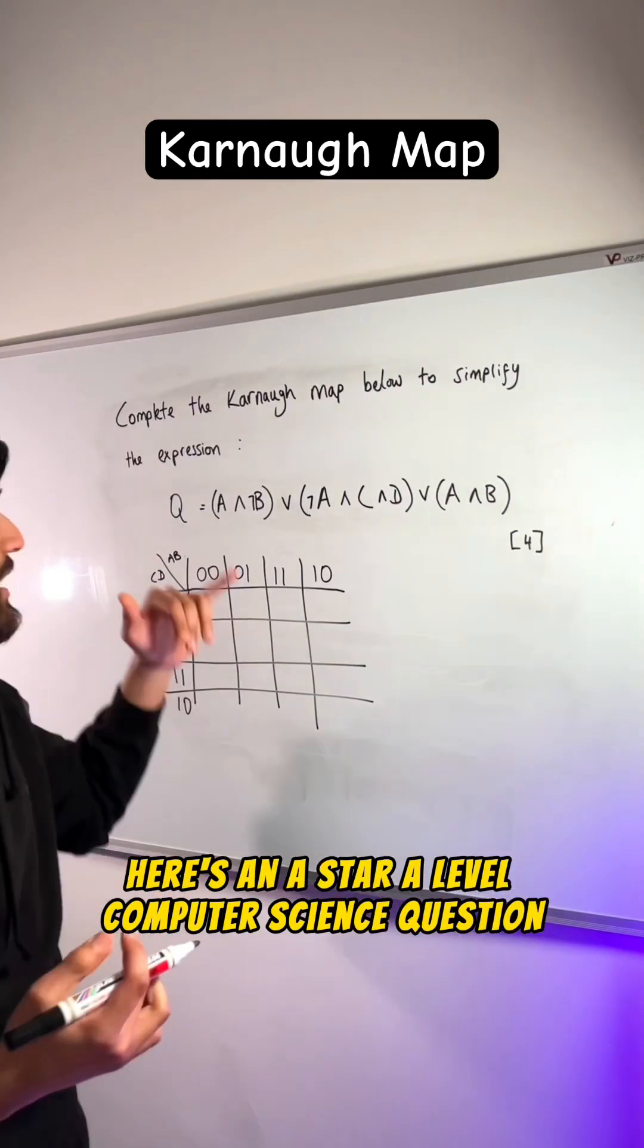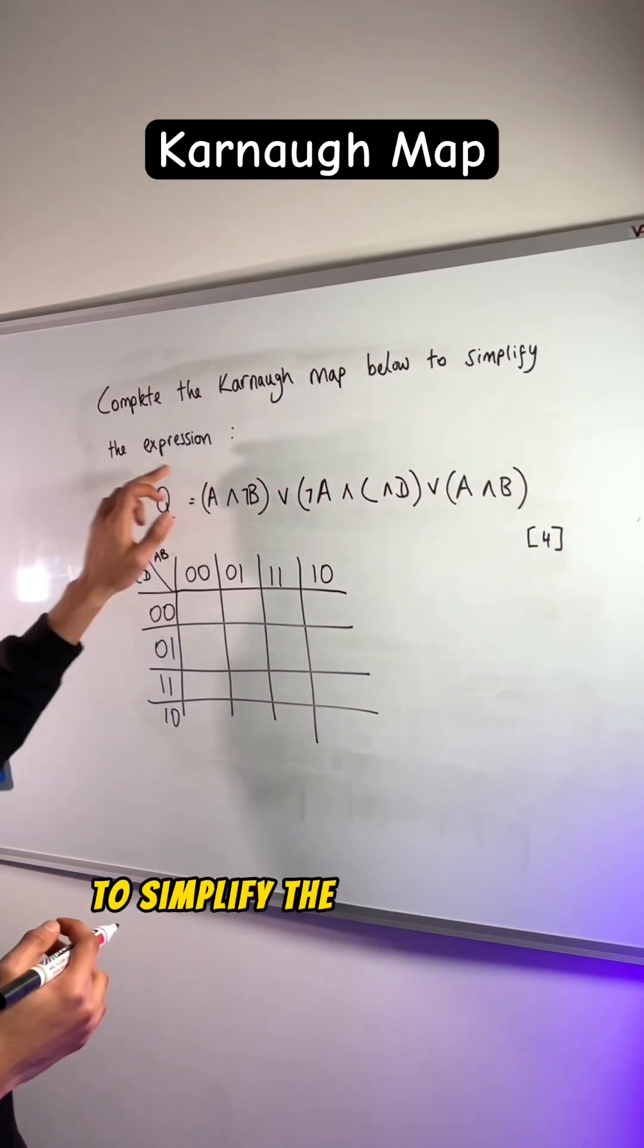Here's an A-star A-level computer science question. Complete the Karnaugh map below to simplify the expression Q.